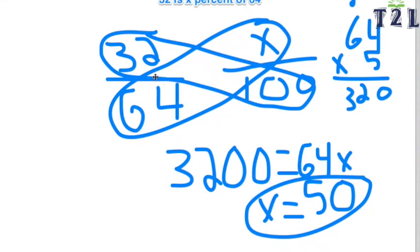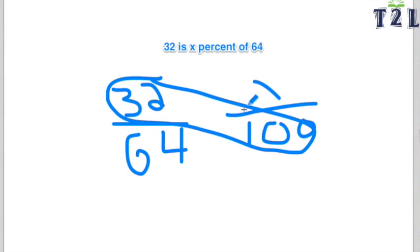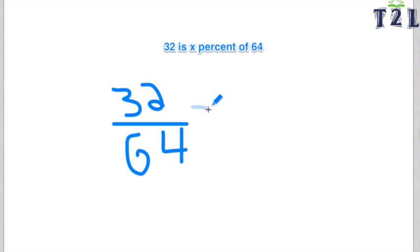The next method I'm going to be showing you is the simplification method. 32 over 64 is a fraction that can be reduced because it's even terms. 32 divided by 32 is 1 and 64 divided by 32 is 2.